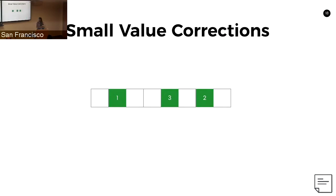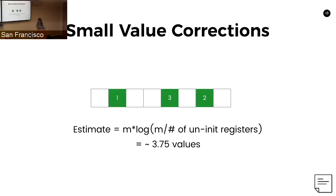At small cardinalities, a majority of registers may still be uninitialized because you've bucketed too wide. There's a probability problem you can use for small-value corrections — you can think about throwing balls into bins randomly. If you see five empty bins out of eight, it's likely you've thrown about three to four balls to have only three bins filled out of eight. This algorithm handles that correction.